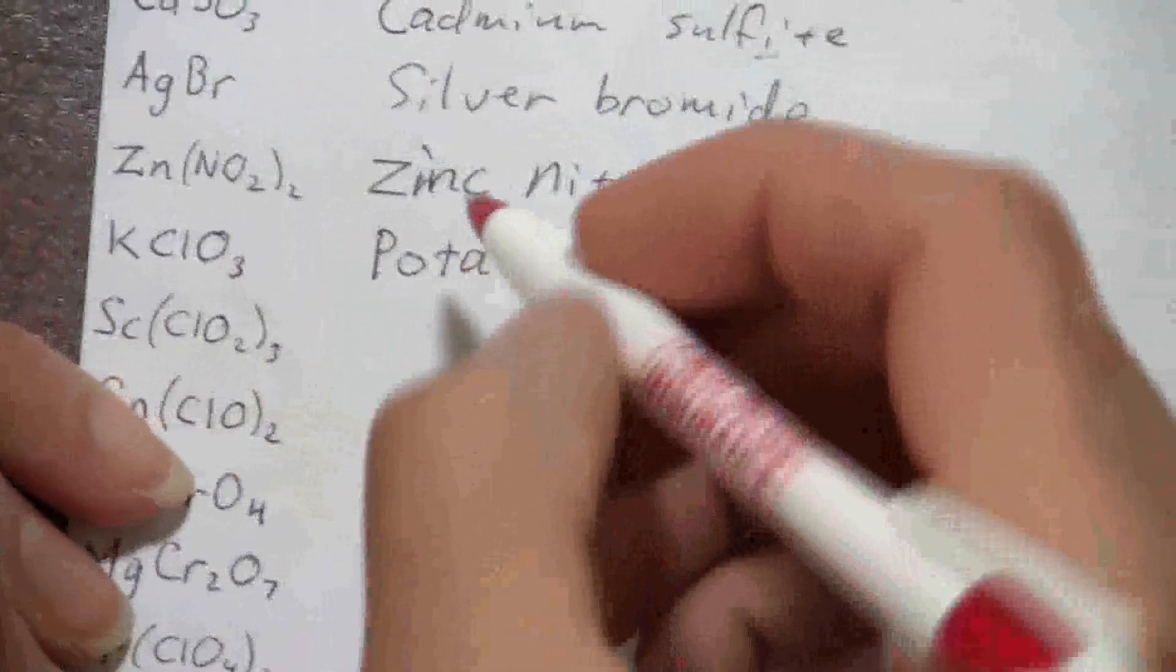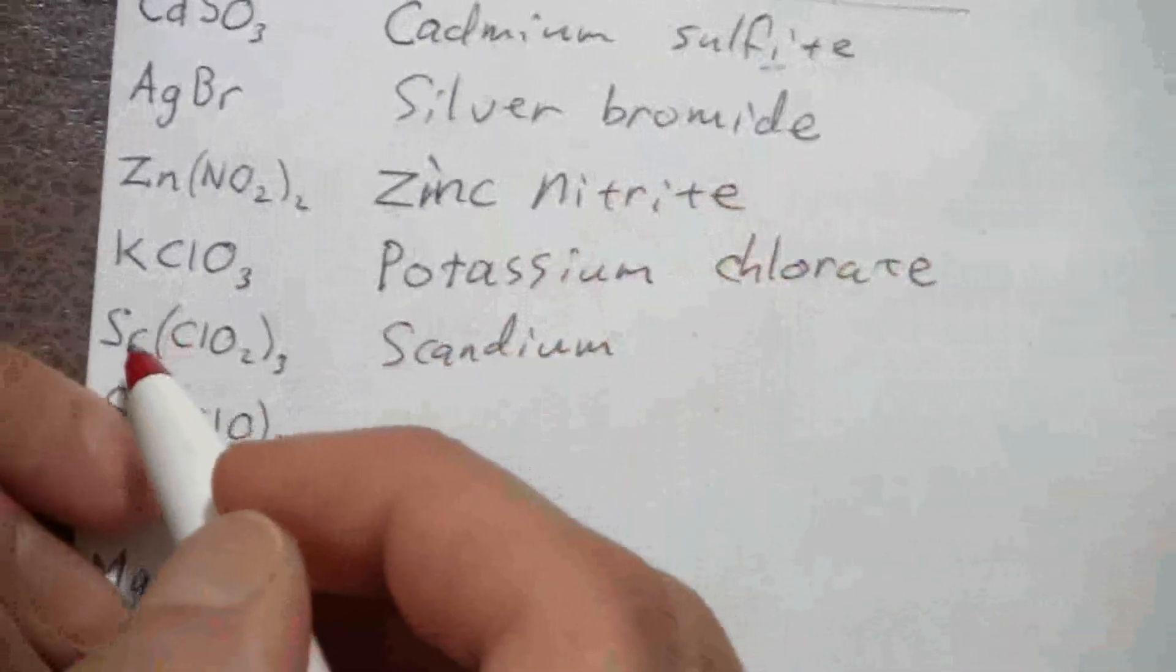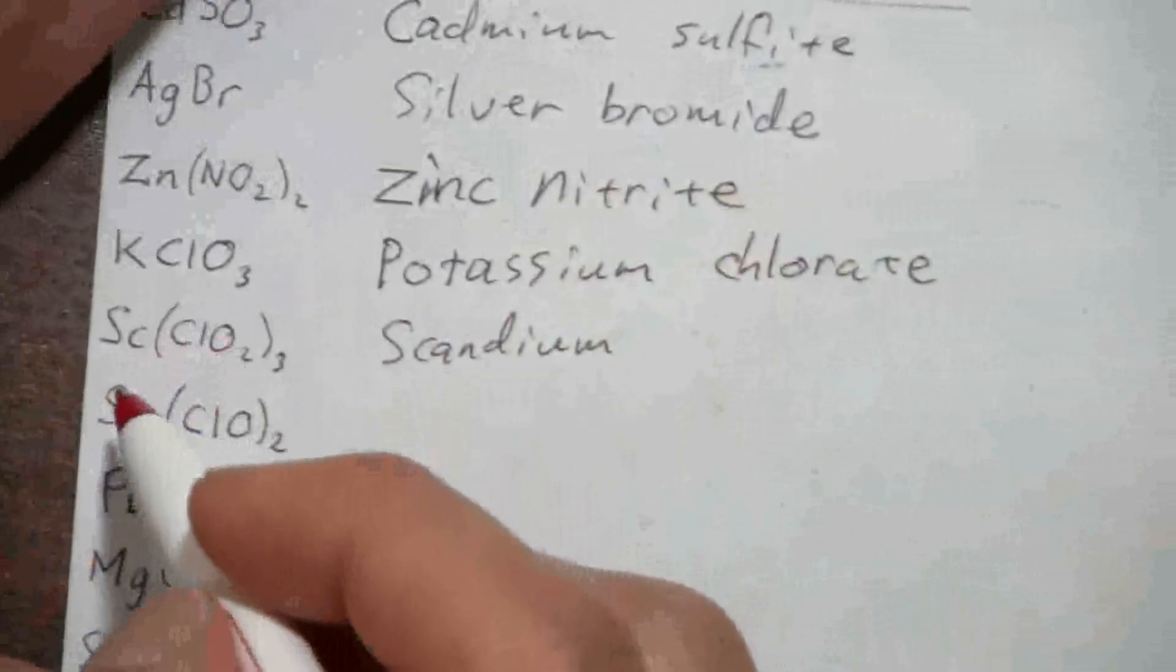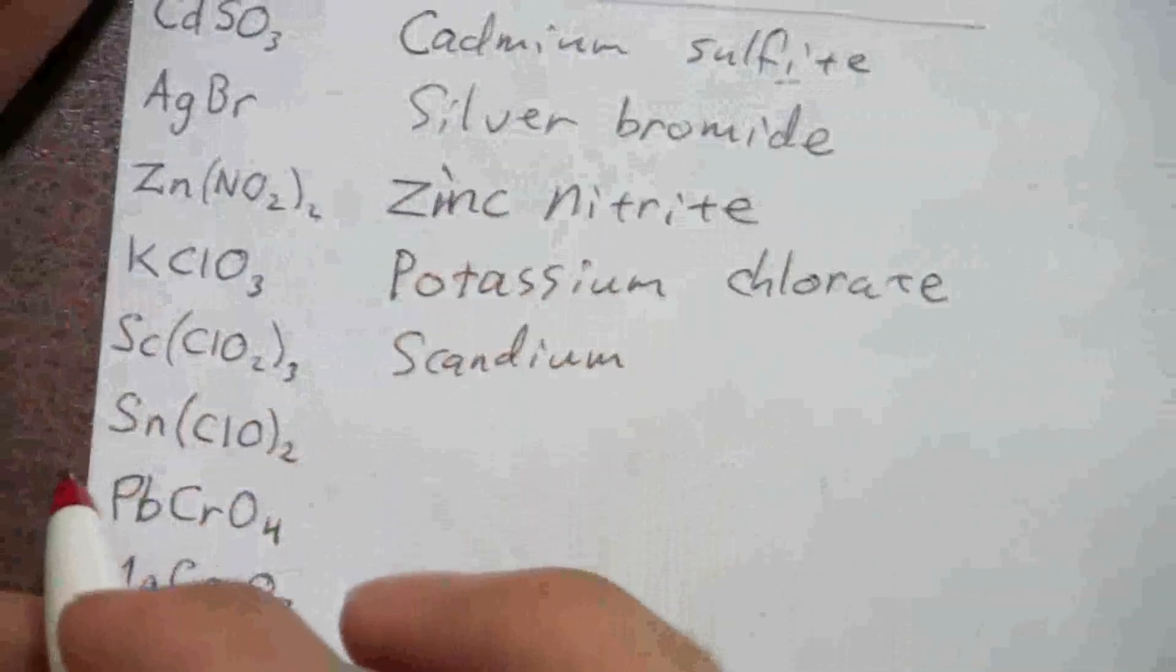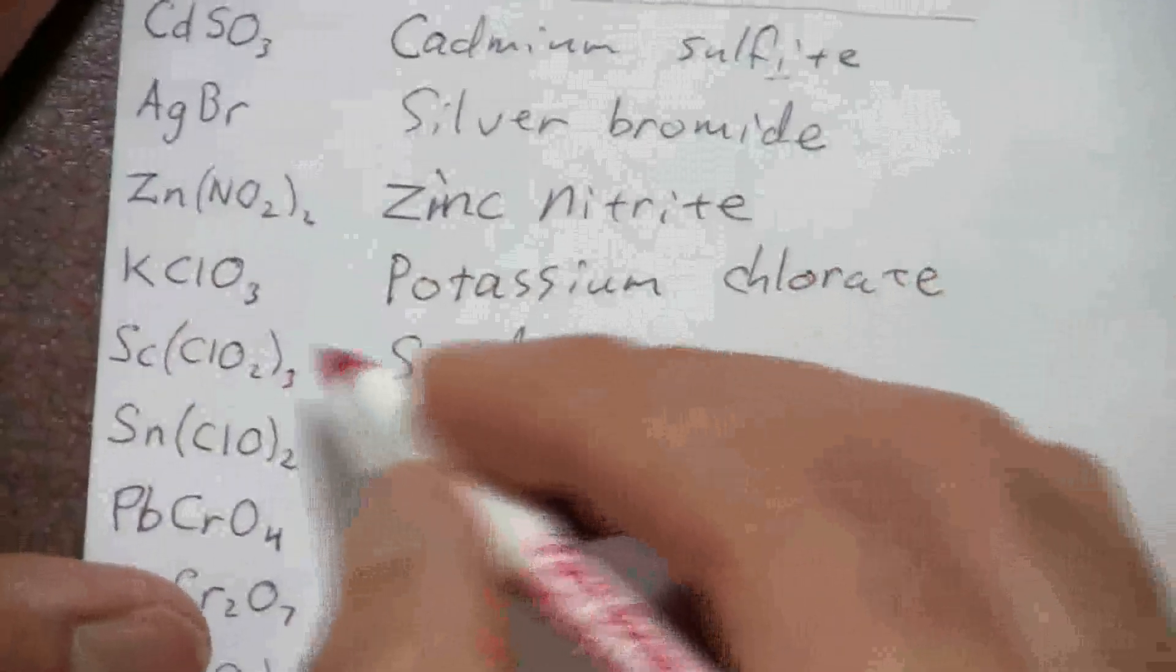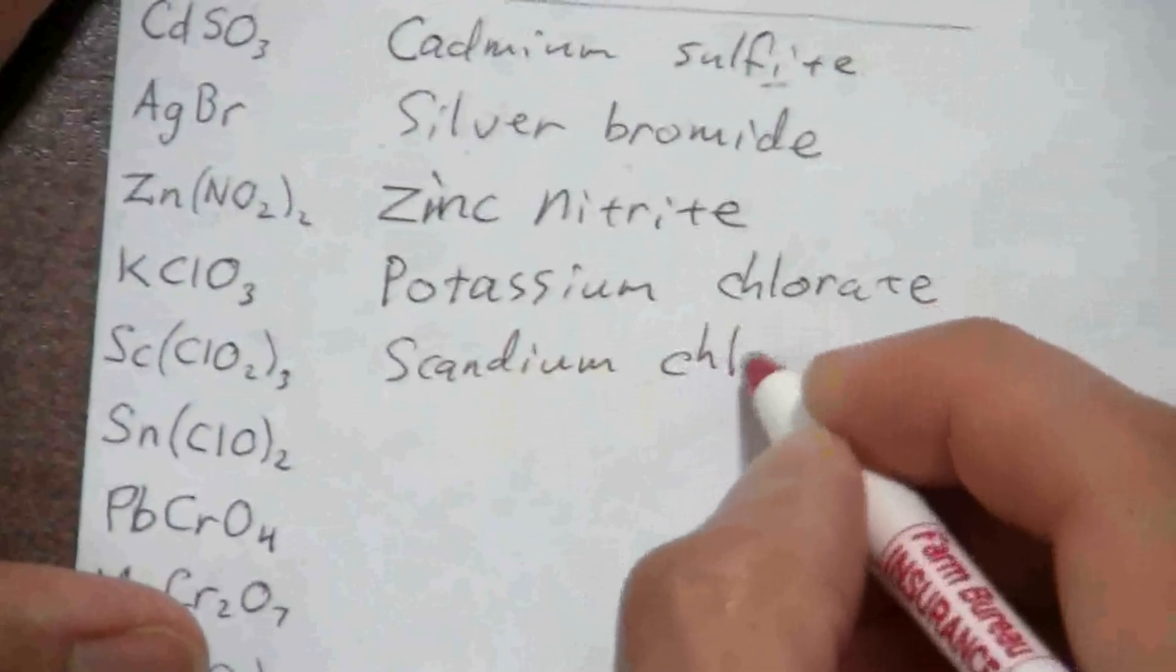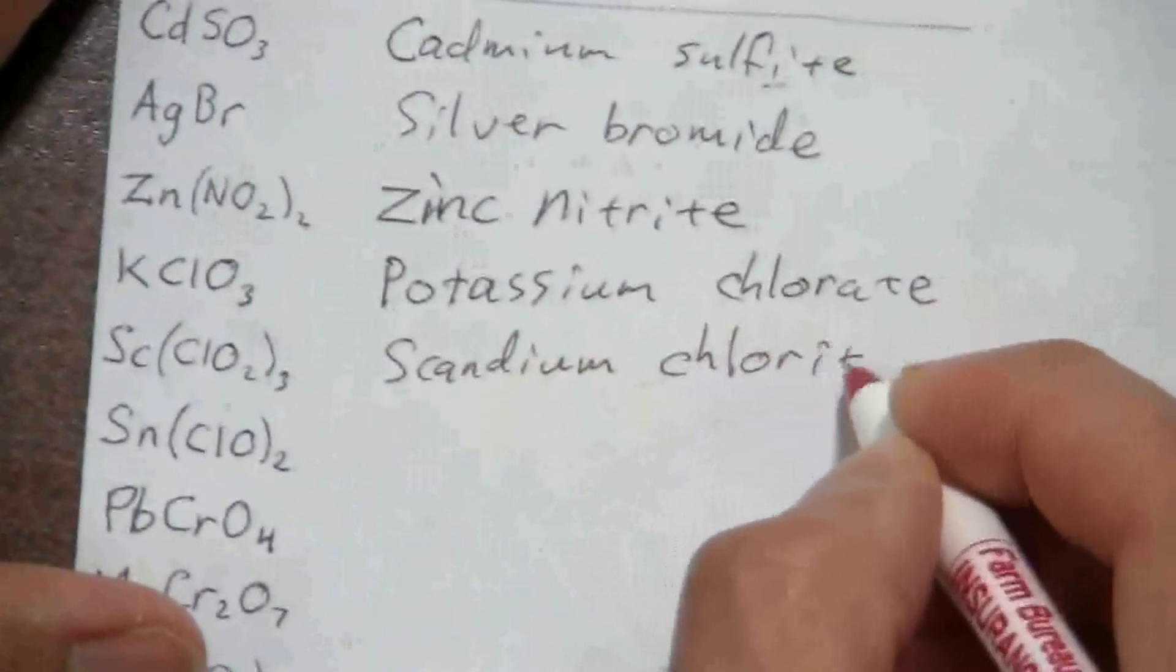And here I have scandium. Remember this is one of the other exceptions that I talked about. It's in that first row, so it always has a plus 3 charge, so I don't show the roman numerals. This will just be scandium and then chlorite.